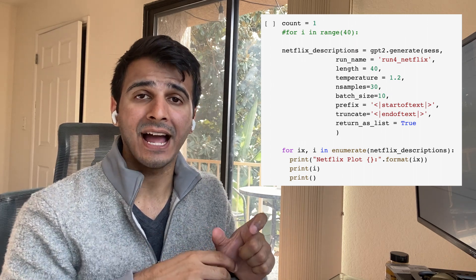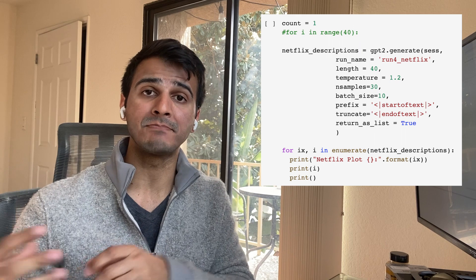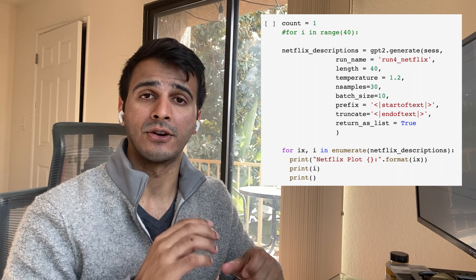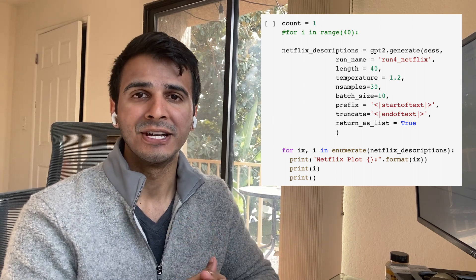The next bit of code is the actual generation piece - where I generate a brand new Netflix description. The output tag used to save the model must match what you use here; in this case it says 'run for Netflix,' and if those aren't consistent, it'll break down. Another parameter I'd like to mention is temperature - if you increase or decrease the temperature, you get descriptions that are more or less ridiculous, which can be really fun especially for Netflix descriptions.